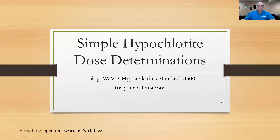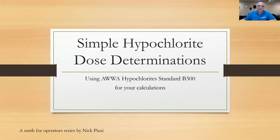This is simple hypochlorite dosage determinations using the AWWA hypochlorite standard B300 for your calculations. B300 provides a lot of information for operators that I think is good for them to have, and we want to go over some of those tables and calculations. It provides background and operating information for hypochlorites in drinking water treatment and the disinfection procedures used in the field and in your distribution systems. There are tables you can use to help operate and calculate chlorine dosage easily.